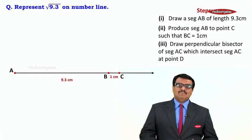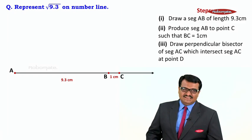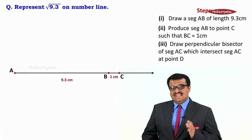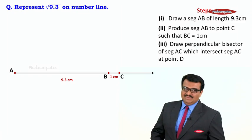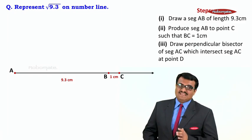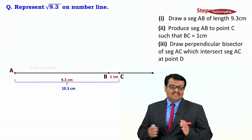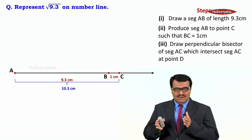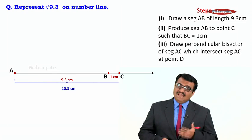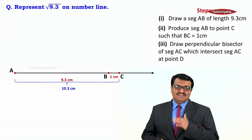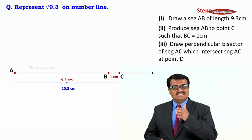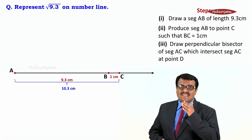Third step: draw a perpendicular bisector of segment AC, which intersects AC at point D. What is the full length of AC? AB is 9.3 and BC is 1, so AC is 9.3 + 1 = 10.3 centimeters.